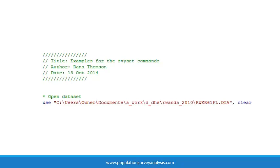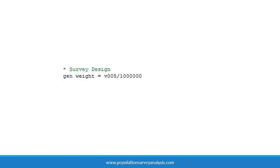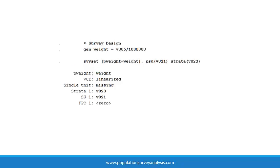Here is an example using the survey set statement from the 2010 Rwanda Demographic and Health Survey. First, we introduce six decimal values to the sampling weight variable V005 by generating a new variable called weight equal to V005 divided by 1 million. Then we specify the survey design in a survey set statement, where the probability weight equals the variable weight, the primary sampling unit equals V021, and the strata equals V023. You can use these same variables to specify the study design in other DHS datasets, or find the equivalent variables if working with a different population survey dataset.